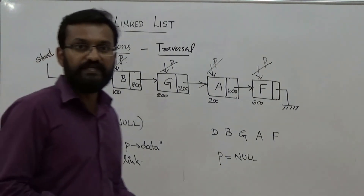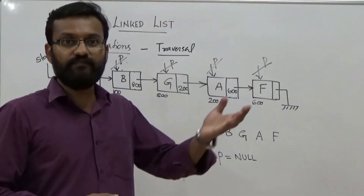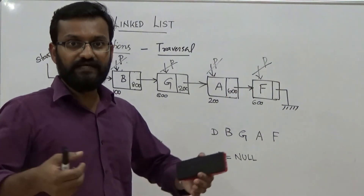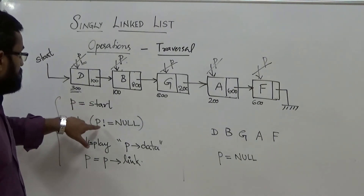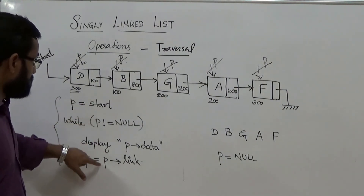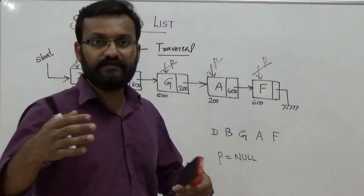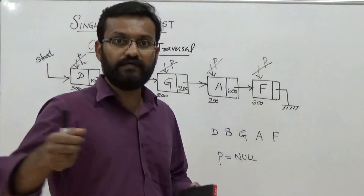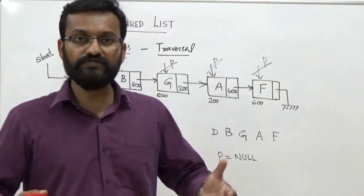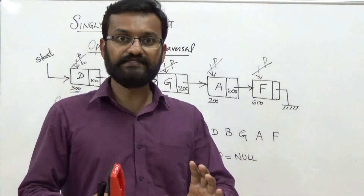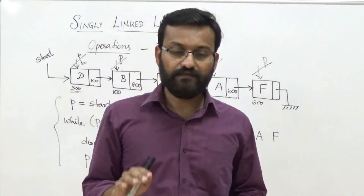What happens if the linked list is empty? An empty linked list is defined by creating a pointer start and initializing it to None. If the linked list is empty, P will get the None value, and when the while condition is checked, the loop will exit immediately without entering the loop body. Before performing the traversal, you should check whether the linked list is empty: if start equals None, you don't need to perform traversal — just output 'linked list is empty'.